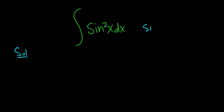it's useful to know a very important identity. The sine squared of x is equal to 1 minus cosine 2x, all divided by 2.